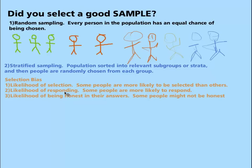Likelihood of responding — some people don't answer surveys. Well, if they're the same as everybody else, then it may not have much effect. But if this group has very different views than everybody else but they don't answer surveys, we might think that people hold a certain viewpoint, but there's this group we're not selecting. So we could very well get wrong answers. Be careful in terms of likelihood of responding. We're assuming there's some diversity in opinions, and you want to make sure that you randomly select people who are likely to respond.